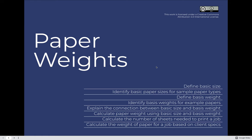Our goal for the Paperweights lesson is to define basic size, identify basic paper sizes for sample paper types, define basis weight, and identify basis weights of four example papers, and then explain the connection between basic sizes and basis weight in terms of calculating the weight of paper. We will use that information to practice calculating paper weight, and then practice calculating the number of sheets needed to complete a print job so that we can fully calculate the weight of paper based on client specifications.